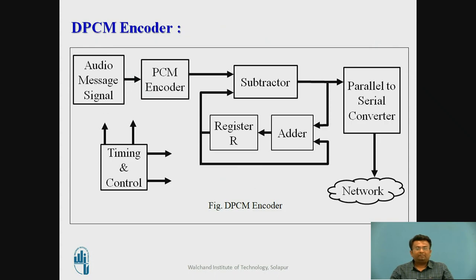A DPCM encoder is shown in the figure. The PCM-coded signal is given to a subtractor. A predicted value is stored in a register. The PCM sample and the predicted sample are subtracted, then converted by parallel-to-serial conversion for transmission. This subtracted value is also added with the previous register value in order to update the register.